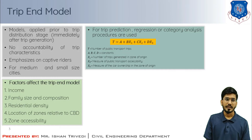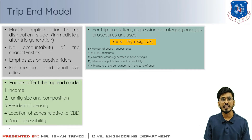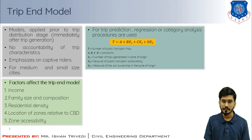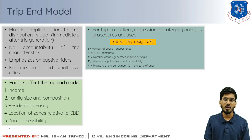Based on that, regression analysis or category analysis procedures are then used to predict the number of trips by various modes such as car, bus, and so on. In this manner, similar to trip generation studies, the description of all those trips will be done.